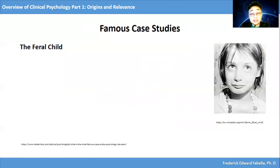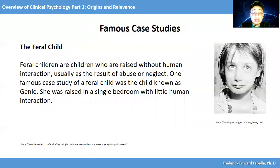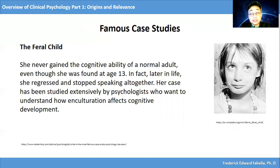Let's consider a next case study: the feral child. Feral children are children who are raised without human interaction, usually as a result of abuse or neglect. One famous case study of a feral child was the child known as Genie. She was raised in a single bedroom with little human interaction. She never gained the cognitive ability of a normal adult, even though she was found at age 13. In fact, later in life, she regressed and stopped speaking altogether. Her case has been studied extensively by psychologists who want to understand how enculturation affects cognitive development.